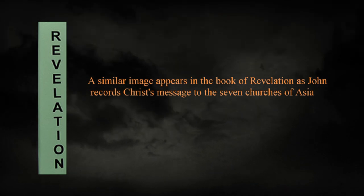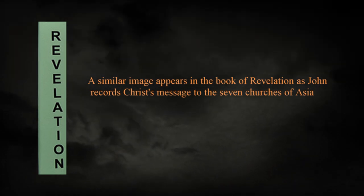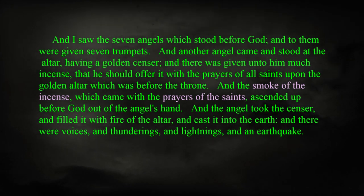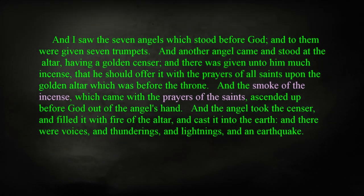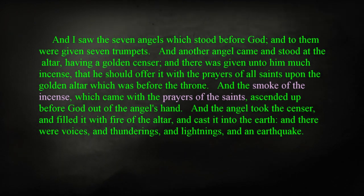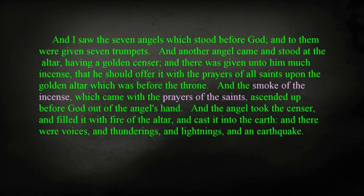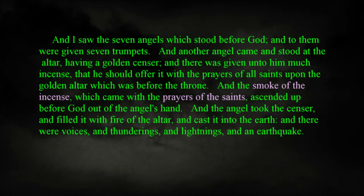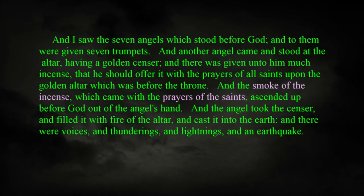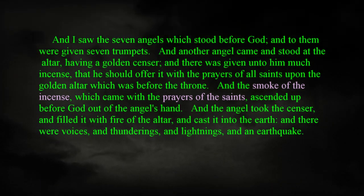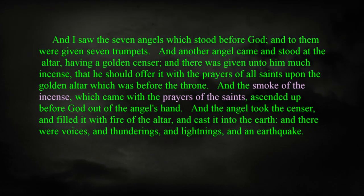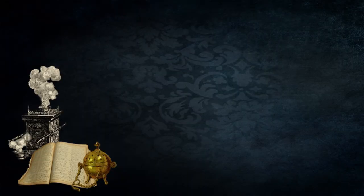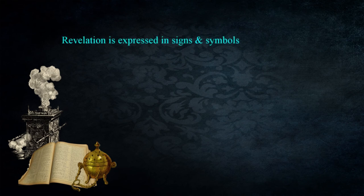A similar image is seen in the book of Revelation as John records the visions directed to the seven churches of Asia: 'I saw the seven angels which stood before God, and to them were given seven trumpets. And another angel came and stood at the altar having a golden censer; and there was given unto him much incense, that he should offer it with the prayers of all saints upon the golden altar which was before the throne. And the smoke of the incense, which came with the prayers of the saints, ascended up before God out of the angel's hand. And the angel took the censer and filled it with fire of the altar and cast it unto the earth, and there were voices and thunderings and lightnings and an earthquake' — Revelation 8:1-5.